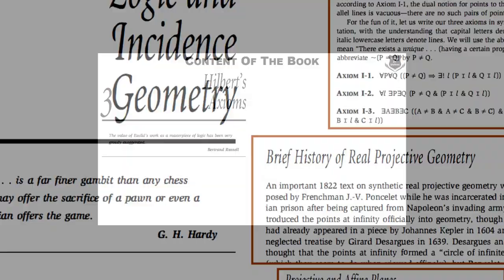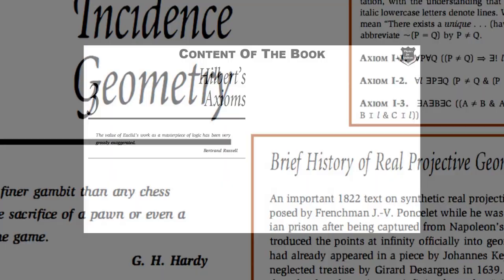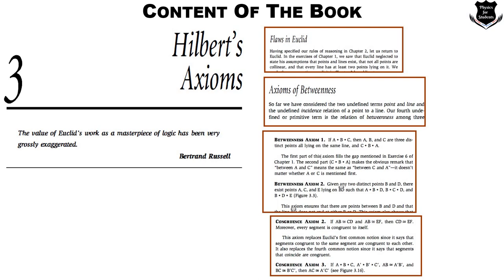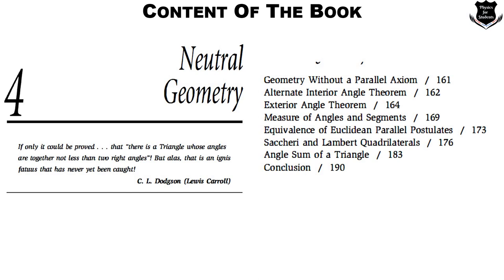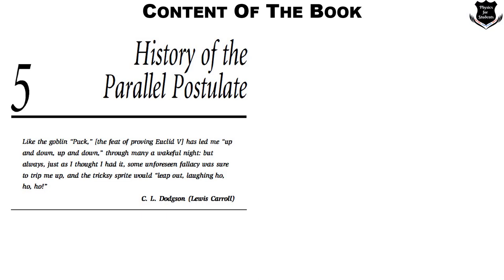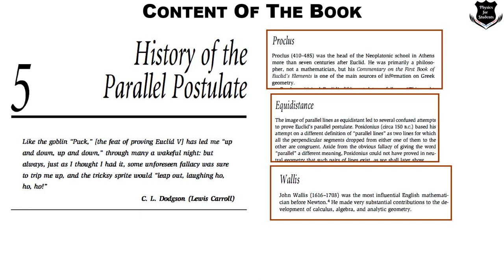The book then covers Hilbert's axioms, the flaws in Euclid, and the axioms of betweenness. Following that is neutral geometry — geometry with the parallel axiom, exterior angle theorem, angle sum, and conclusions. Then it moves into the history of the parallel postulate, starting with ancient history from Proclus, the concept of equidistance, John Wallis's contributions to analytic geometry, the Chlorius and Proclus theorem, and Farkas Bolyai — covering everything about the history of the parallel postulate so you understand where the theorems came from.